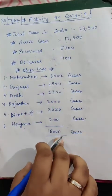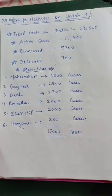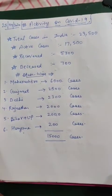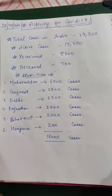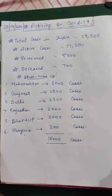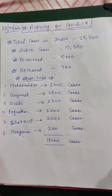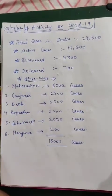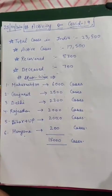In total we have around 15,000 cases from these few states, and in total there are 23,500 cases. We will try to merge these facts and figures into our study activity. As we know, the chapter we have covered is integers, so let's do integers using these facts and figures.